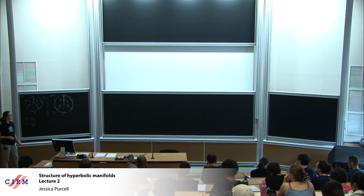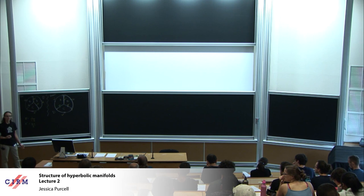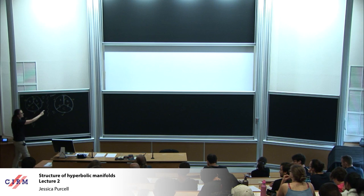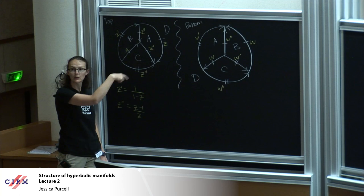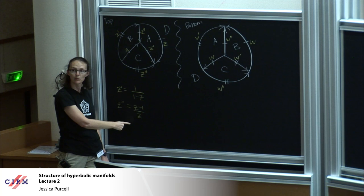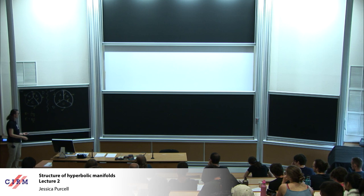We've decomposed the figure eight knot complement into two ideal tetrahedra. Remember last time we were talking about edge parameters of a tetrahedron — each of these tetrahedra gets its own edge parameter. I've labeled one with Z and the other with W. We have three edge parameters per tetrahedron: Z, Z prime, and Z double prime. Recall that opposite edges have the same label, and Z prime equals one over one minus Z, Z double prime equals Z minus one over Z, and similarly for W and W prime.